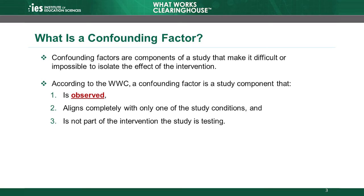What is a confounding factor? Confounding factors are components of a study that make it difficult or impossible to estimate the true effect of an intervention because the effect of the intervention cannot be distinguished from the effect of that component.